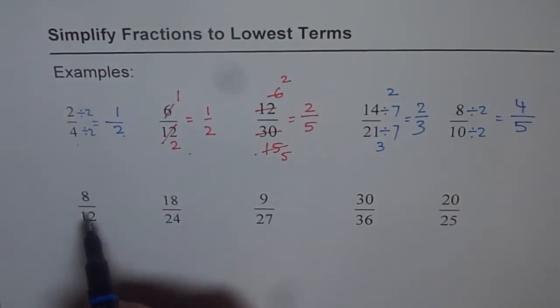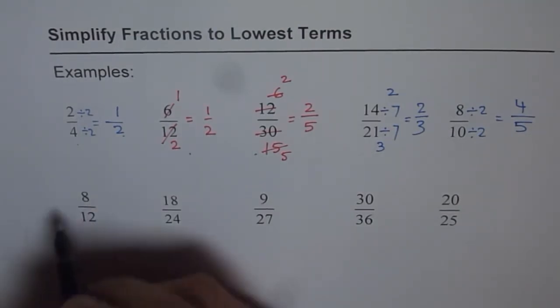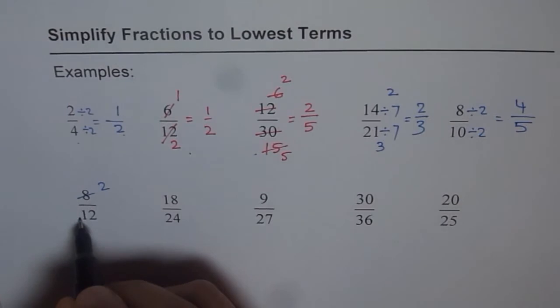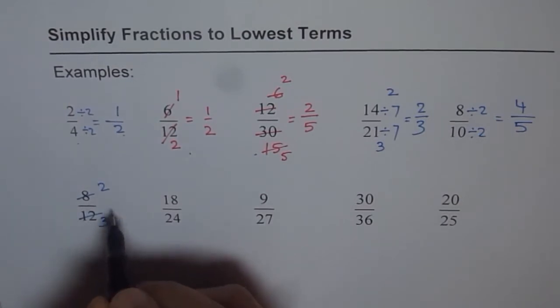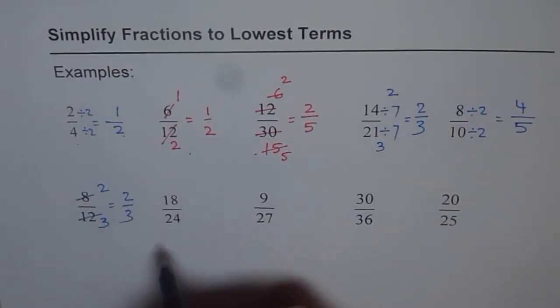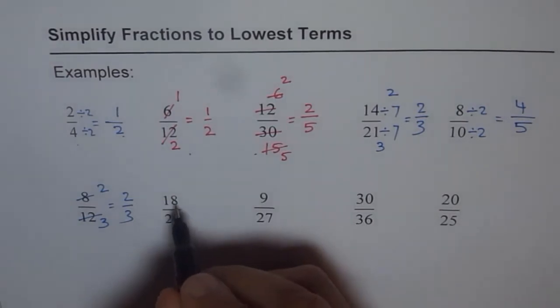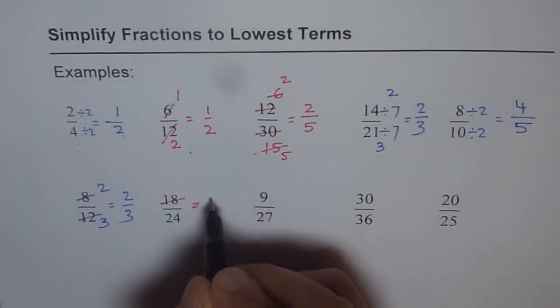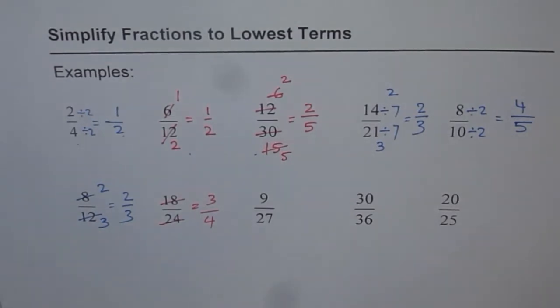8 over 12. Both can be divided by 4. 4 times 2 is 8. And 4 times 3 is 12. And so I can write this as equals to 2 over 3. How about 18 over 24? 6 is my magic number. 6 times 3 is 18. And 6 times 4 is 24. So I can write this as 3 over 4.